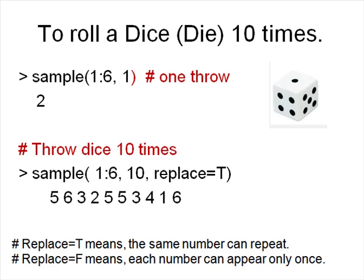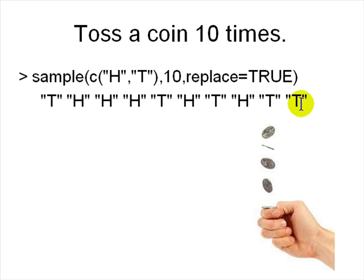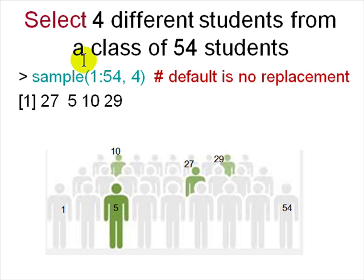To toss a coin, create a vector of two strings — 'c("head", "tail")' — and sample 10 times with replace=TRUE. Note: TRUE and T are synonymous in R, but this 'T' here is actually the string for 'tail'. So you get a sequence of 10 heads and tails. To sample 4 students from a class of 54: 'sample(1:54, 4, replace=FALSE)' — giving, say, 27, 5, 10, 29 — four people with no repetitions.